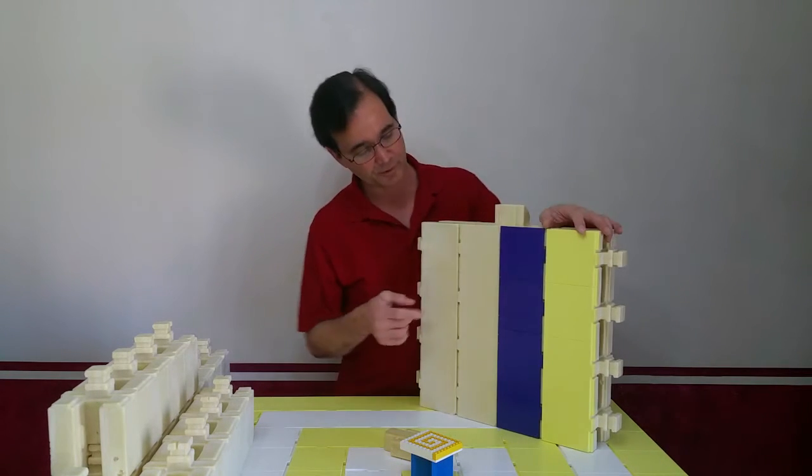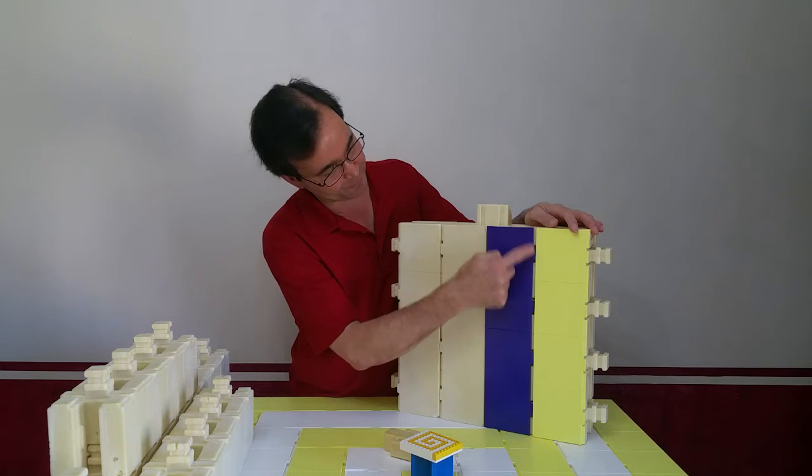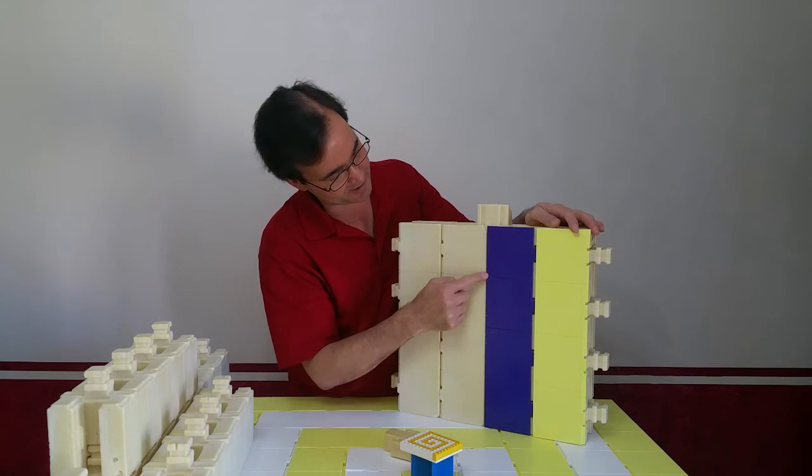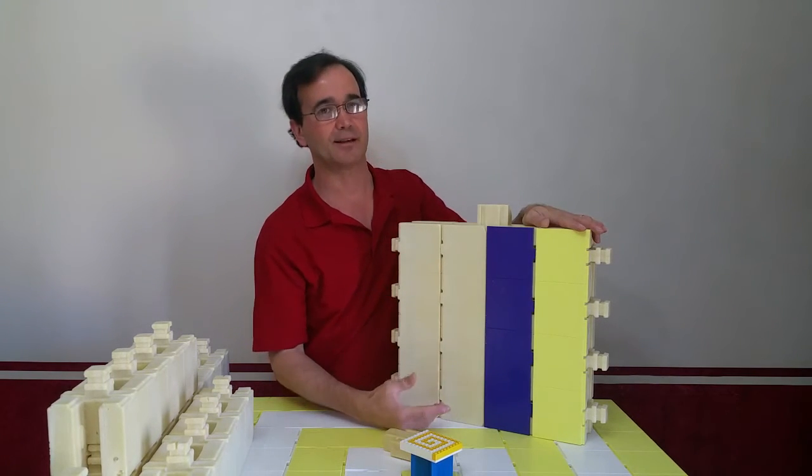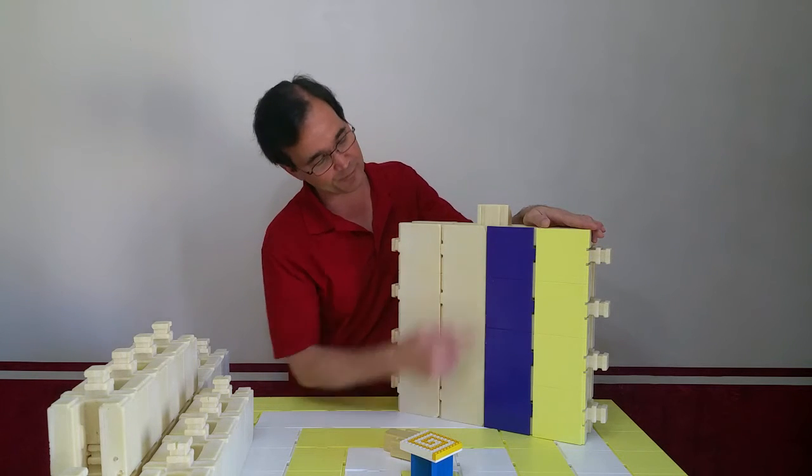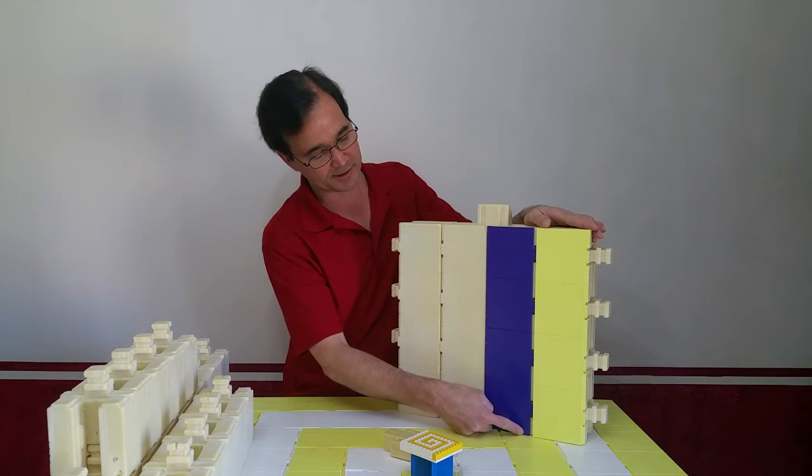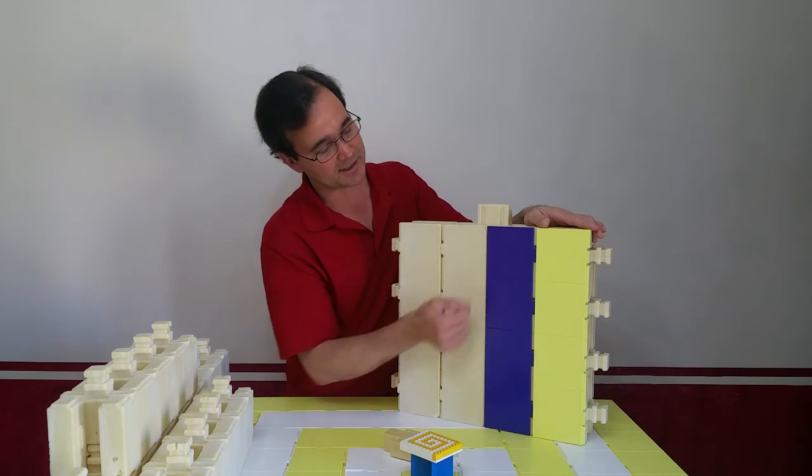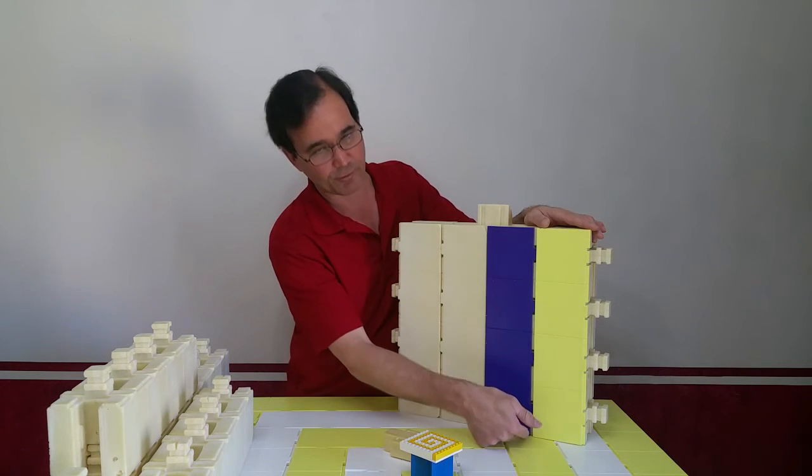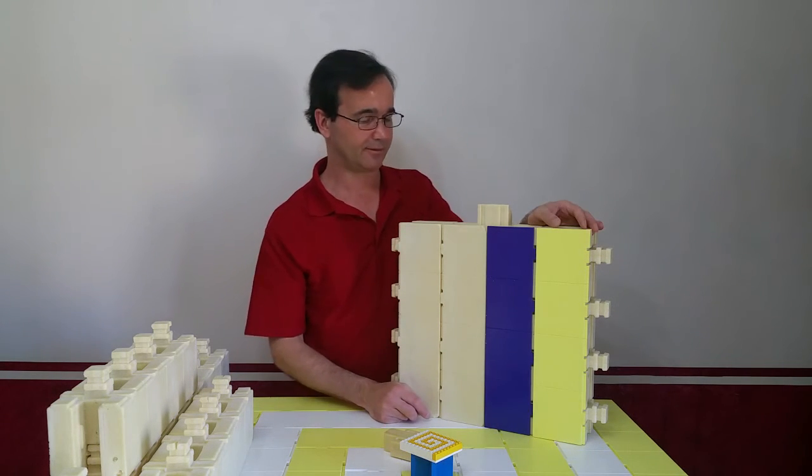What's really neat too is if you look really closely, this measures four inches by four inches, and the width is four inches. So whatever you make is always based on a perfect cube. This block happens to be 16 inches high as it stands right now, four inches wide and four inches deep. So it's really neat.